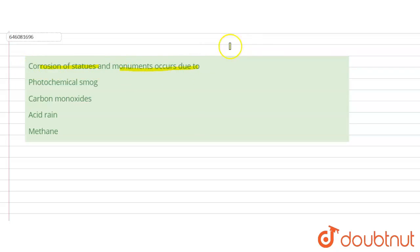Let us try to find the correct answer: which of the following causes the corrosion of statues and monuments? Let's go through our options. The first is photochemical smog.